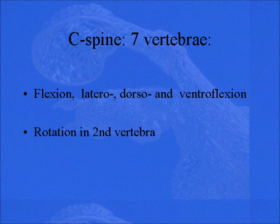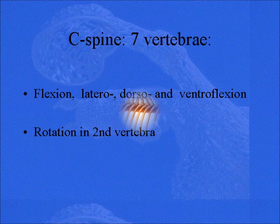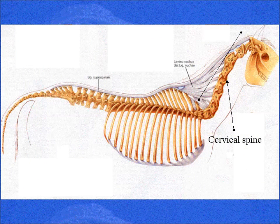Let's go to the spine. The C-spine is the cervical spine, the neck. We have seven vertebrae and they can do a lot. They can go sideways, clearly up and down, so there's a lot of flexion options. And there's also rotation between the first and the second vertebrae — they can rotate and make the horse look sideways. The cervical spine at the right end of the picture shows seven vertebrae attaching the head to the thoracic spine, to the ribcage.